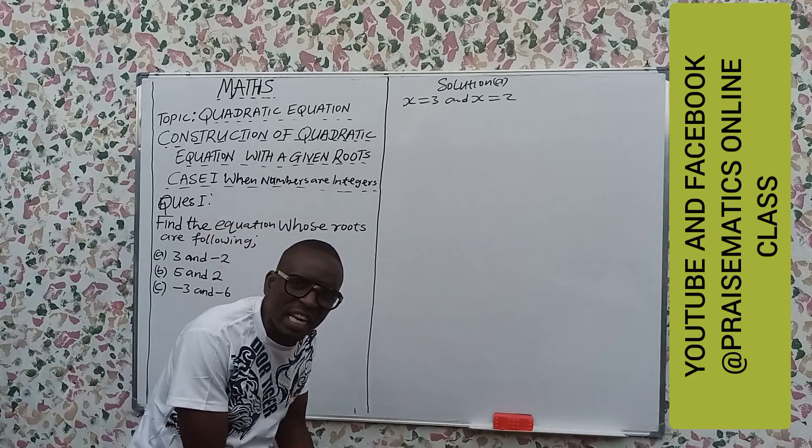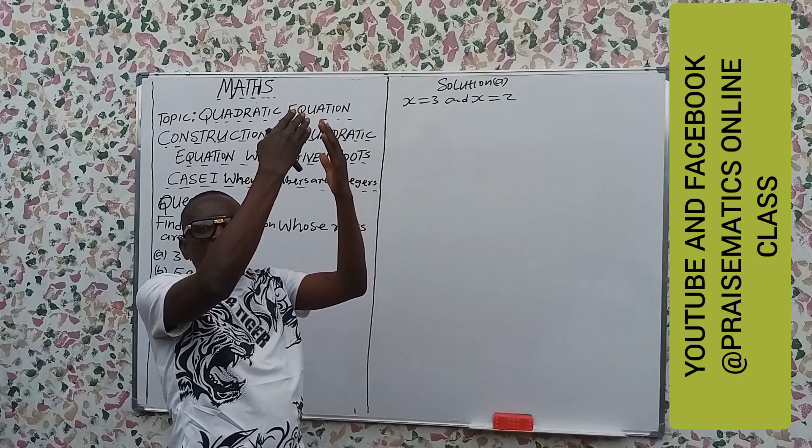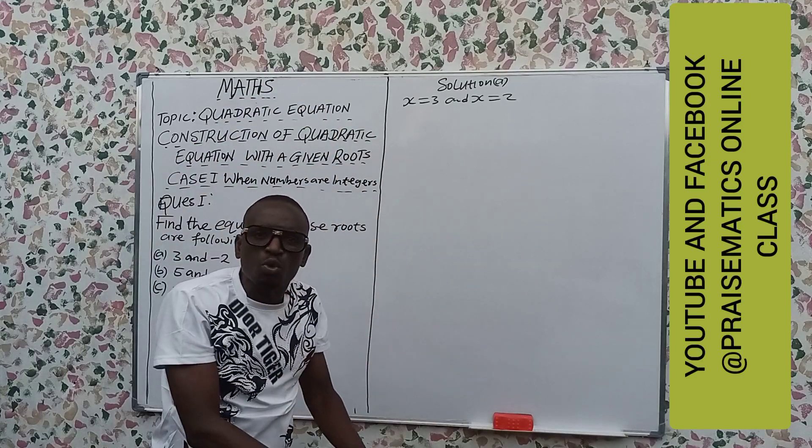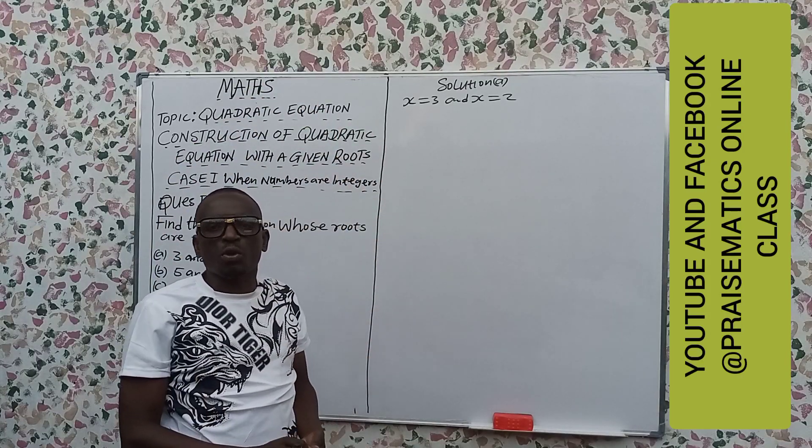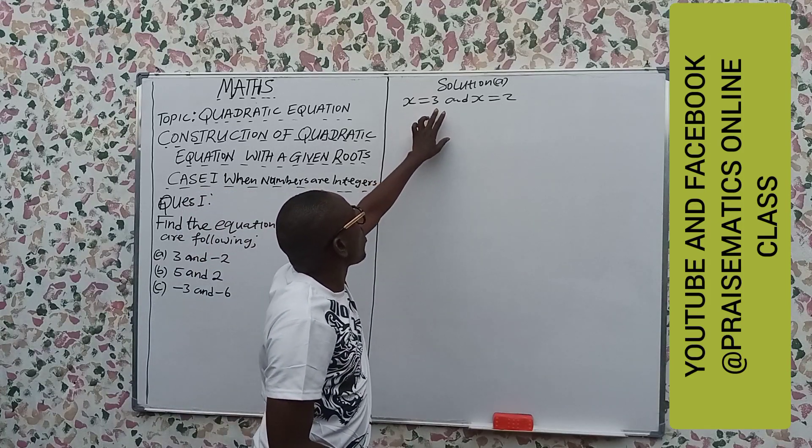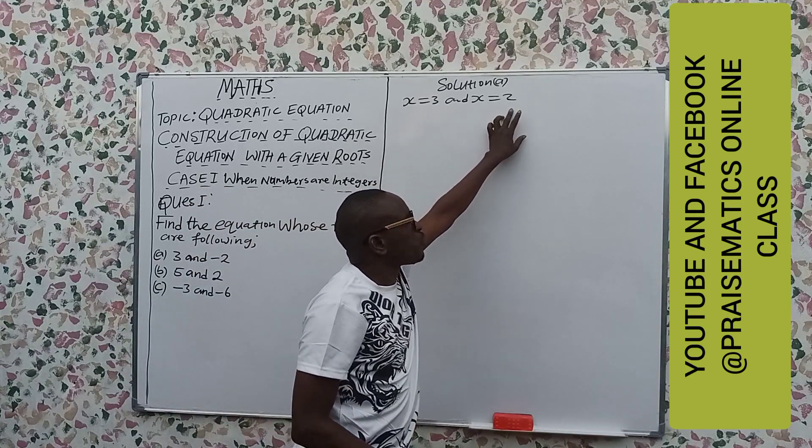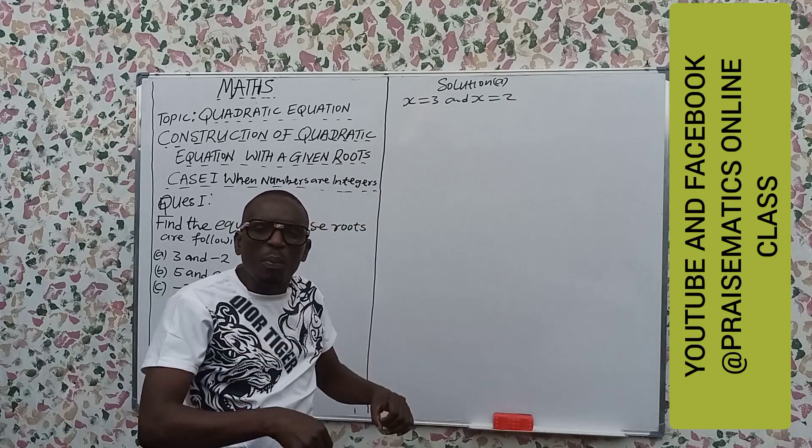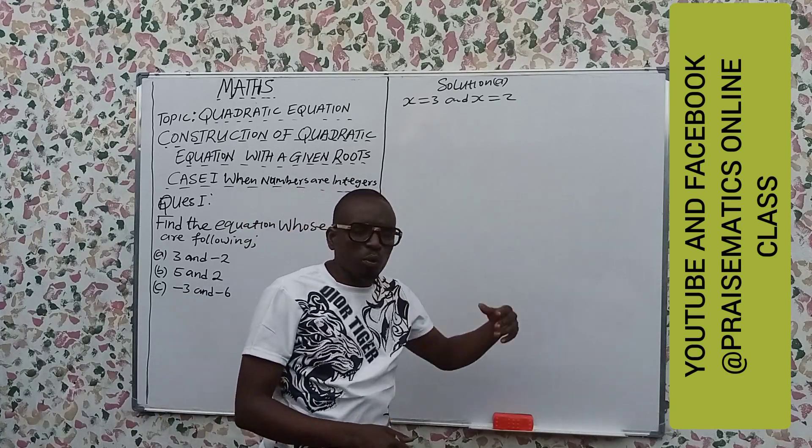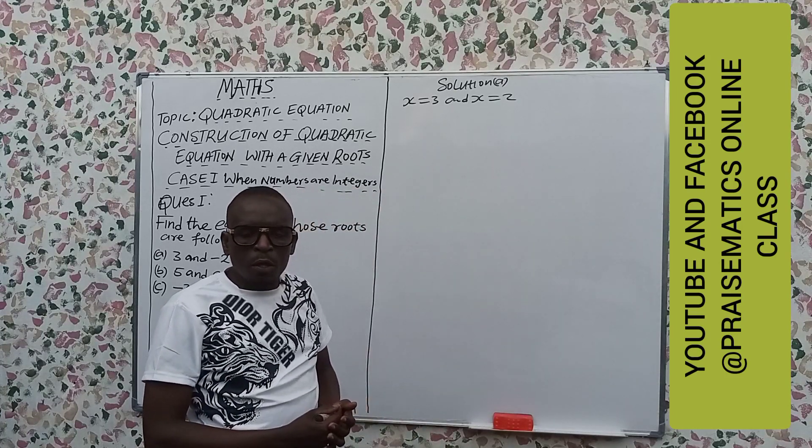The previous video gave us a quadratic equation and asked us to find the solution. So now we are returning back from the last to the back. The first one we are forming, and we are forming a quadratic equation. So they gave us that x is equal to 3 and x is equal to minus 2. We need to form a quadratic equation of this given root.